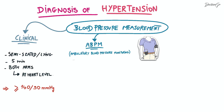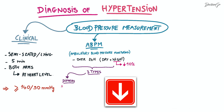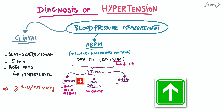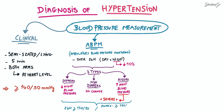Second, ambulatory blood pressure monitoring (ABPM) assesses blood pressure over a 24-hour period, enabling comparison of daytime and nighttime blood pressure, with a normal decrease of at least 10% during the night. This method distinguishes three types: dippers who experience a decrease in nighttime blood pressure, non-dippers who show no significant change, and risers who encounter an increase at night. Nocturnal hypertension carries a higher cardiovascular risk than daytime hypertension, and hypertension is diagnosed if 24-hour ABPM readings are equal to or greater than 130 systolic or 80 diastolic.